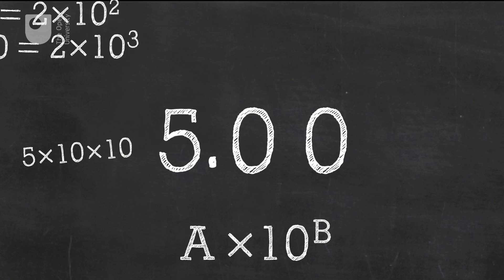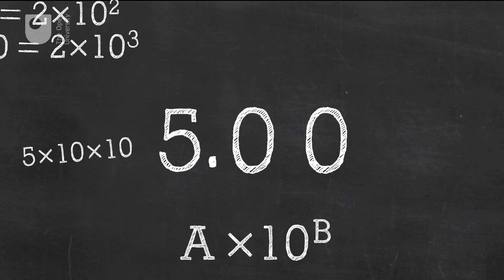Another way to think about that is that the decimal point is at the right-hand end and it needs to hop over two digits until there's only one digit remaining in front of it. The number of hops is two, which is therefore the number b. So the number 500 is written as five times ten to the power of two in scientific notation.